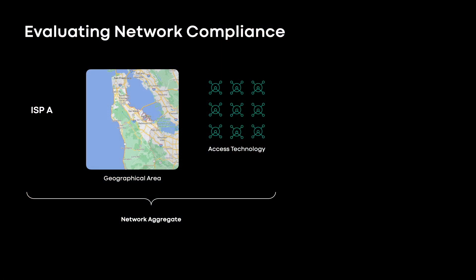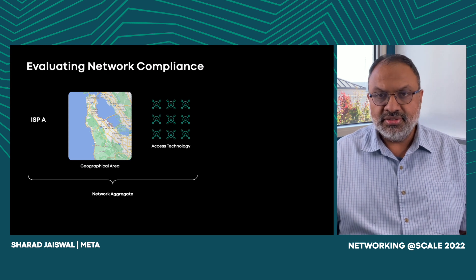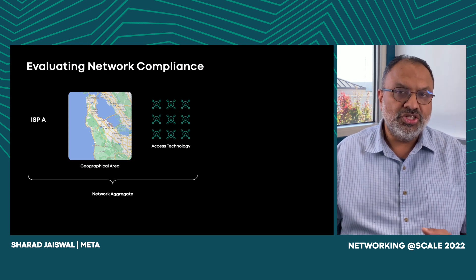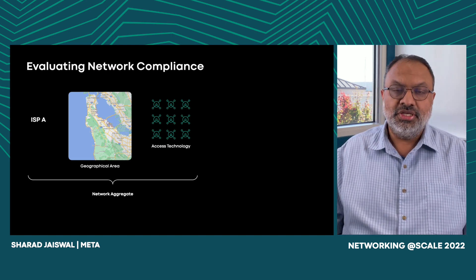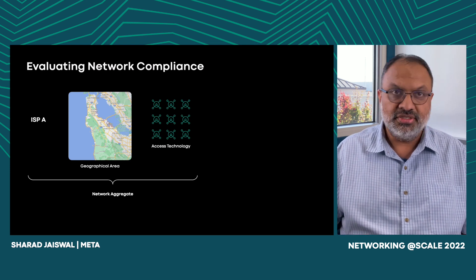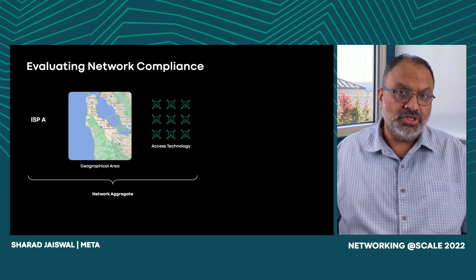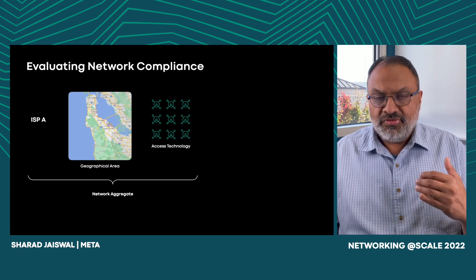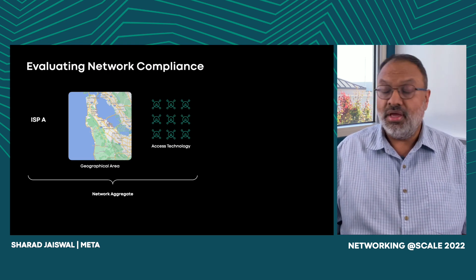The SLI threshold tells us what the application needs from the network, but how do we evaluate whether the network is actually able to meet this? We must first define what we mean by a network in this context. An intuitive criteria would be an entire ISP, but an ISP can be made up of users with different access technologies and geographic locations with very different network characteristics — mixing them all together may not lead to useful, actionable insights. So we developed a novel approach to clustering clients called network aggregates, using active measurements to localize clients by geographic proximity and access technology. A network aggregate maps clients with homogenous access technologies and similar geographic locations into one tuple, and this forms the granularity at which we evaluate network SLO compliance.